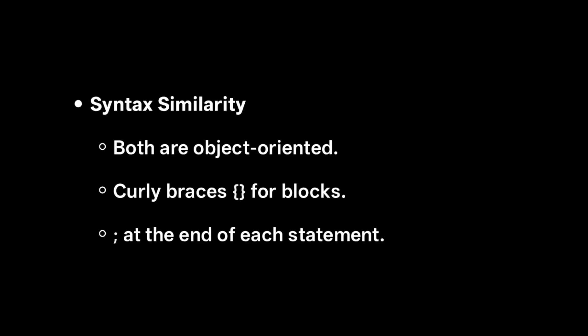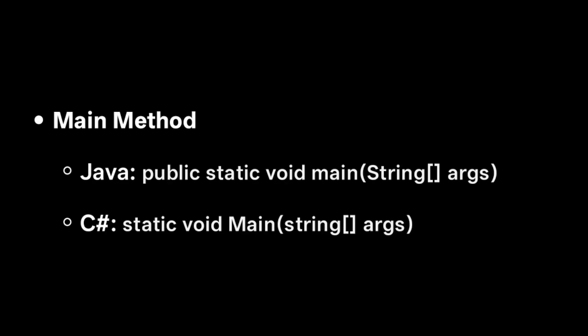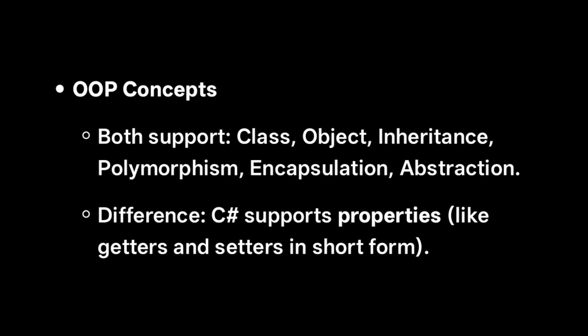If you already know C#, you can skip this part — I will give timelines in the description so you can go directly to the MCQ section. Let's get into the video. Both Java and C# are object-oriented languages, both follow curly braces syntax (unlike Python), and statements always end with a semicolon. Comparing the main method: in Java it is 'public static void main(String args)' whereas in C# it is 'static void Main(string[] args)' — note that string is lowercase in C#.